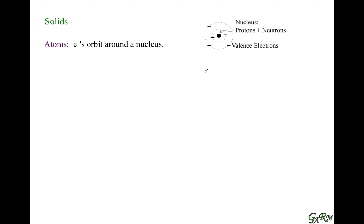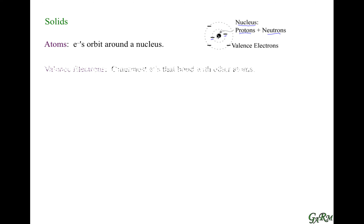To start the discussion of solids, we need to talk about atoms. An atom has a nucleus in the middle, and that nucleus has protons which are positively charged, and neutrons which have no charge. We have electrons orbiting around this nucleus at various distances. Valence electrons are electrons in the outermost edge of the atom, and these are responsible for bonding — more specifically, what we call covalent bonding.